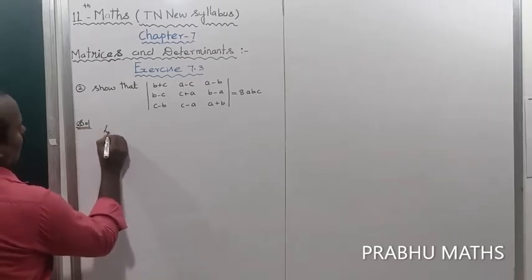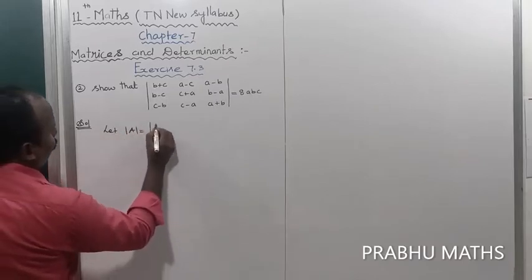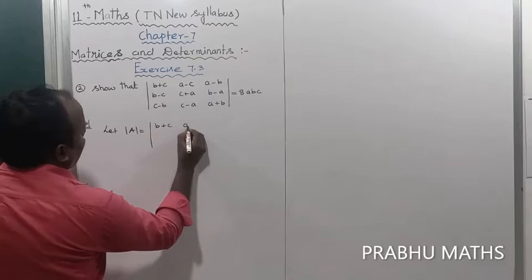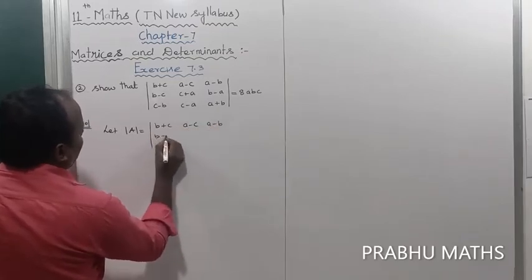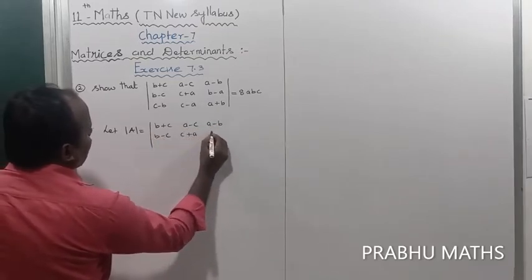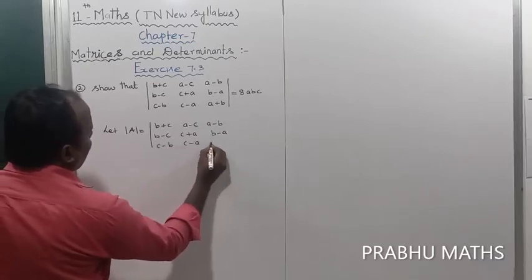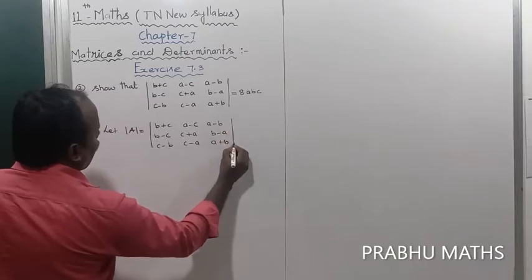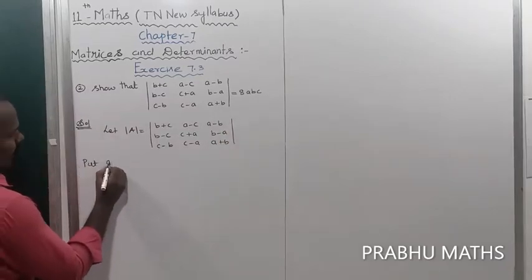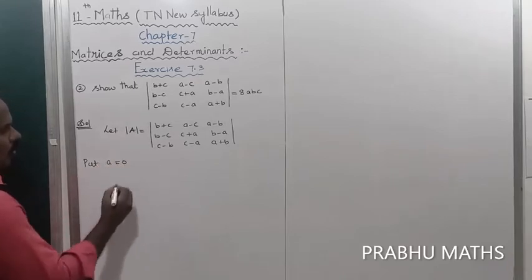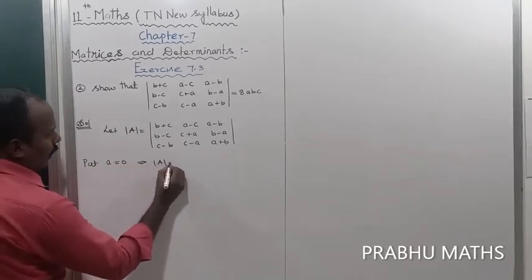Let us consider the determinant Δ(a) equal to the determinant of b plus c, a minus c, a minus b, b minus c, c minus c plus a, b minus a, c minus b, c minus a, a plus b. First, put a equal to 0.